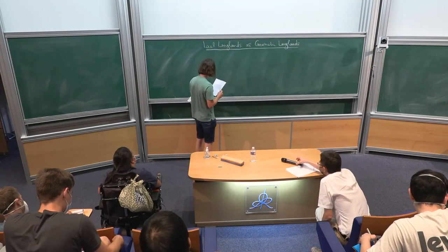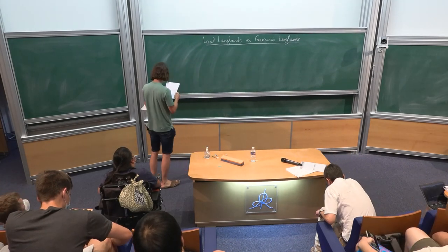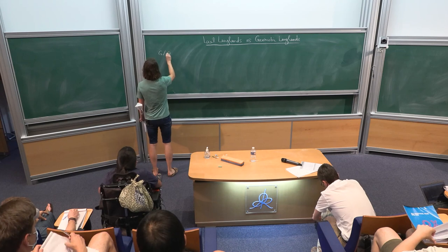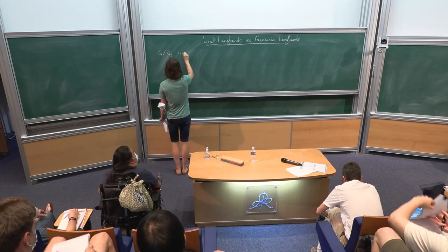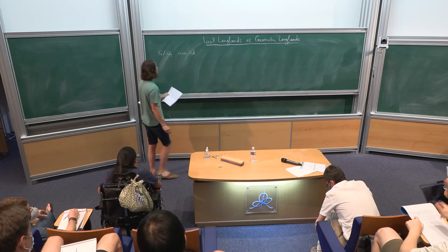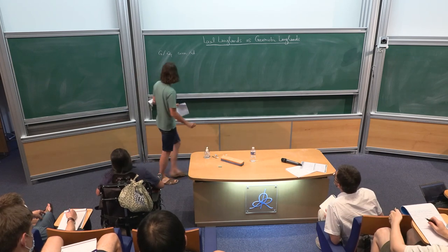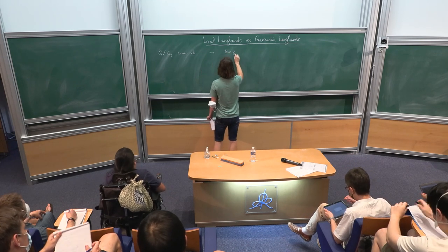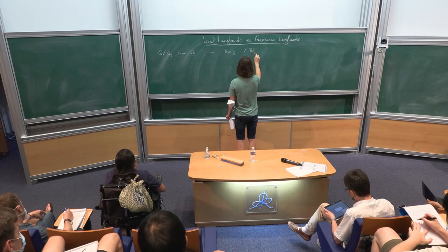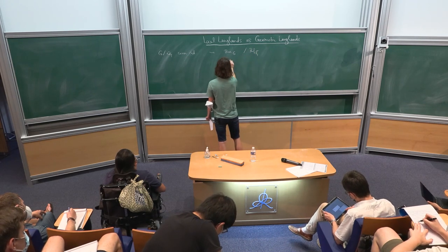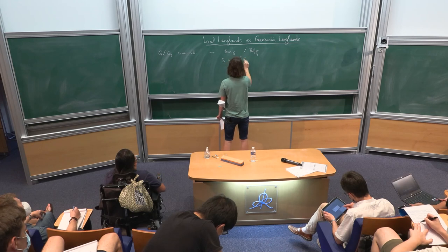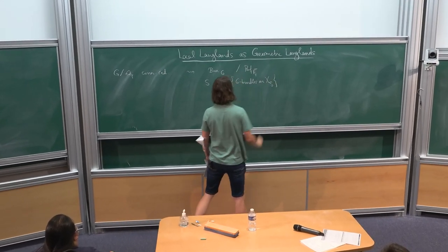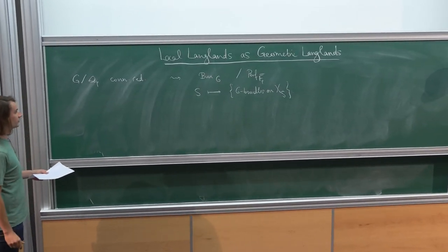Last talk before the weekend. I hope you're not yet too tired. As in my last talk, I have a connection to Dr. Krüv over Q_p, or Q_p could really be any local field, but for concreteness Q_p. Last time I introduced this stack Bun_G, which was a stack on this category of perfectoid spaces over F_p-bar, sending any such perfectoid space to the G-bundles on X_S. I was discussing some of its geometric properties.